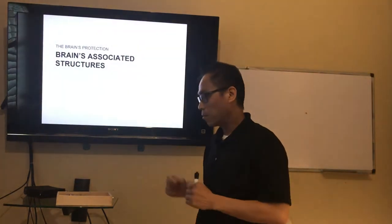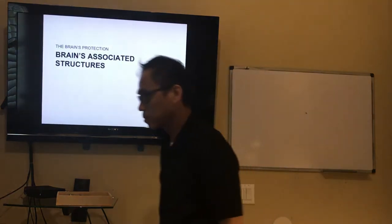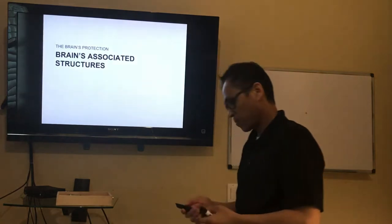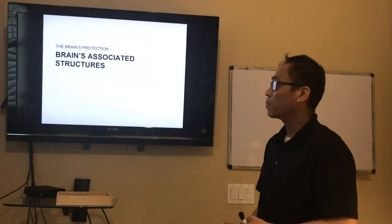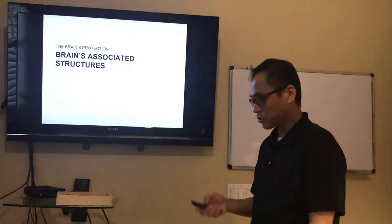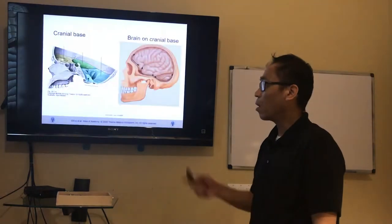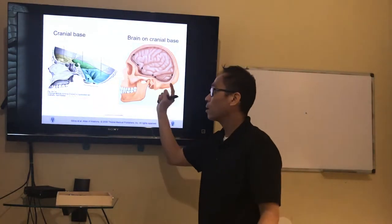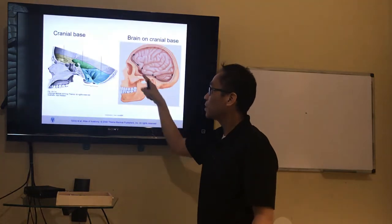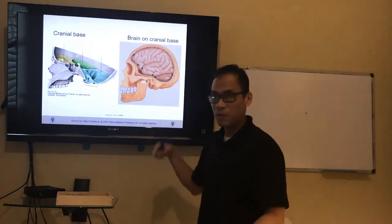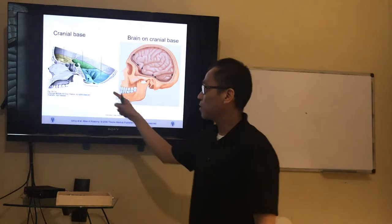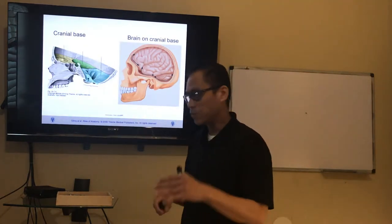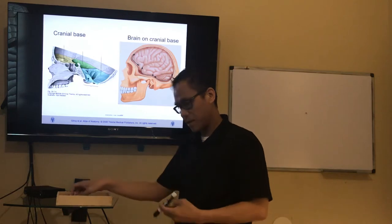Hi guys, welcome to brain part two. We're going to start with the brain's associated structures. The brain sits in the cranial cavity in your skull, on top of the cranial base. There are depressions in the skull called the cranial fossa — that's what the brain sits in inside the brain case.